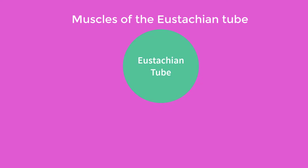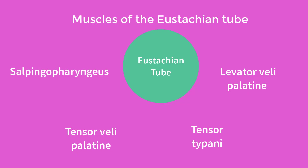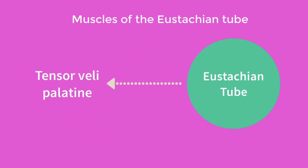The eustachian tube is surrounded by four key muscles: the tensor velli palatini, the tensor tympani, the levator velli palatini, and the salpingo pharyngeus muscles. The function of opening the eustachian tube has been attributed to each of these four muscles at some point in the past. However, it is now widely accepted that opening of the eustachian tube occurs solely as a result of the function of the tensor velli palatini muscle.